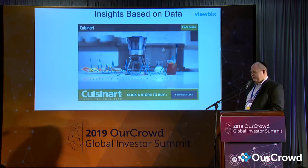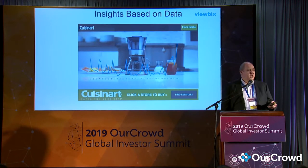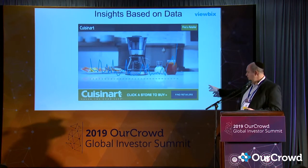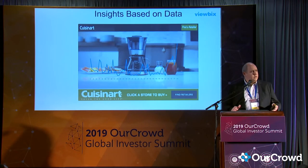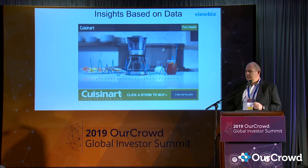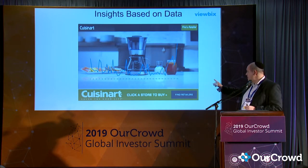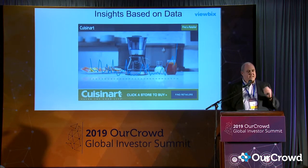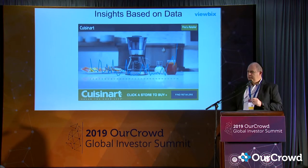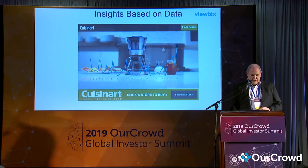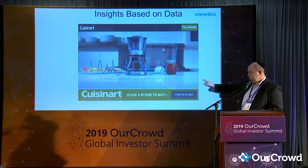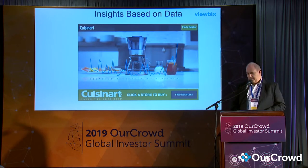Here's an example of a customer of ours, Cuisinart. They want to drive people to retailers — they don't sell direct. When you click on 'Find a Retailer,' it brings in a live feed of retailers that have the product in stock at the price point they want to sell. The blue line represents second by second when people are clicking on that to actually find a retailer, and you start to see what's happening in the video on these spikes that are driving performance.